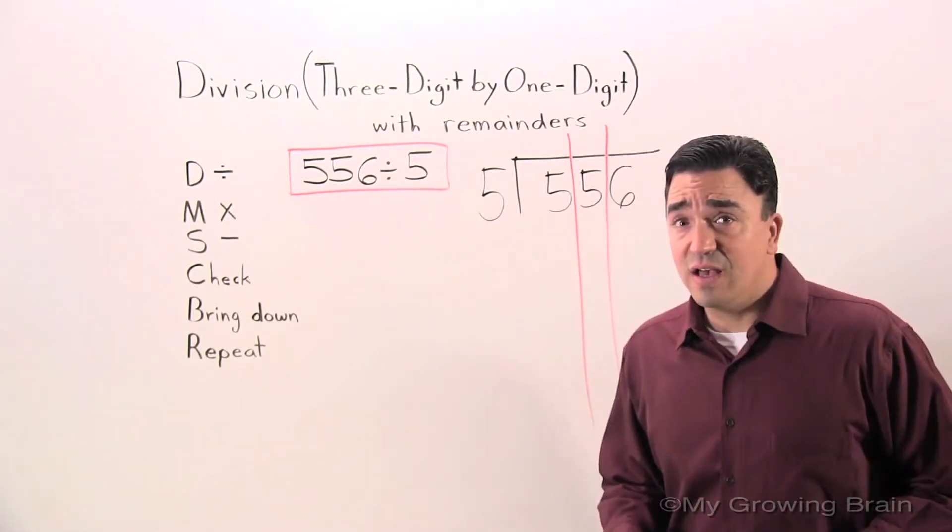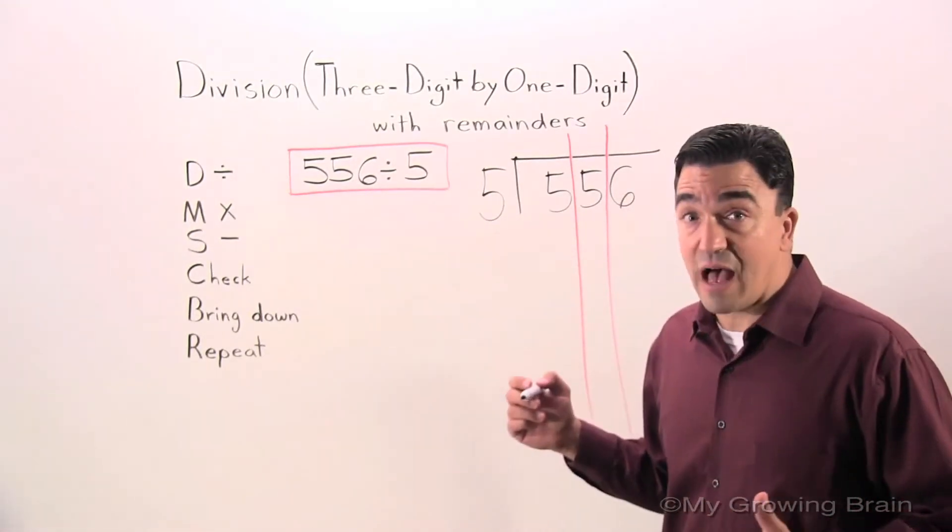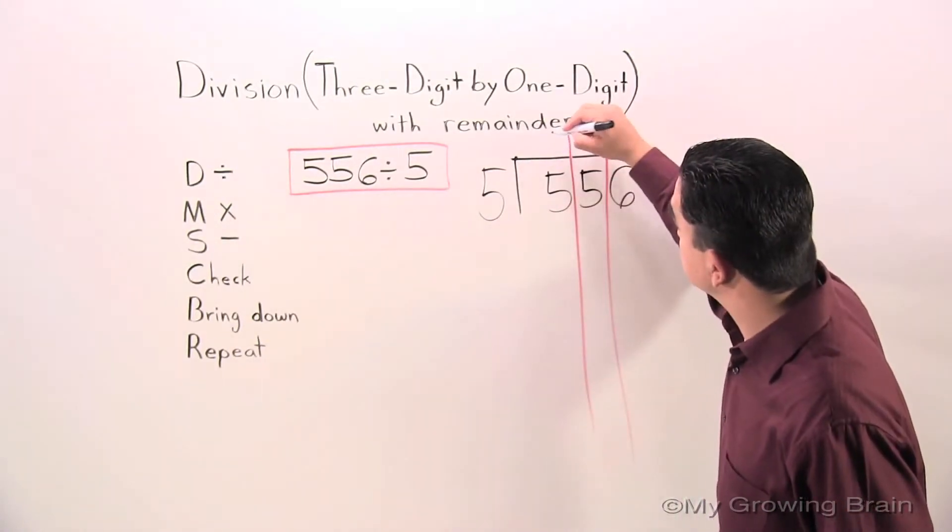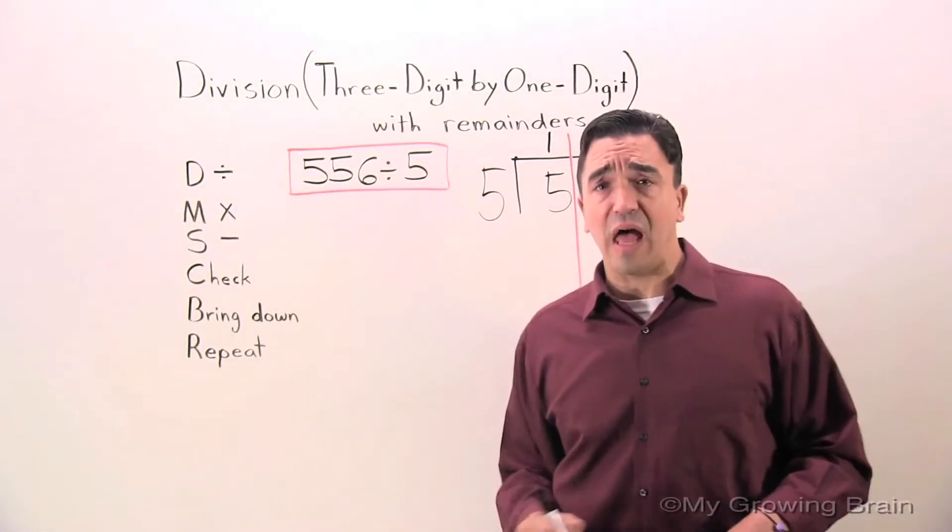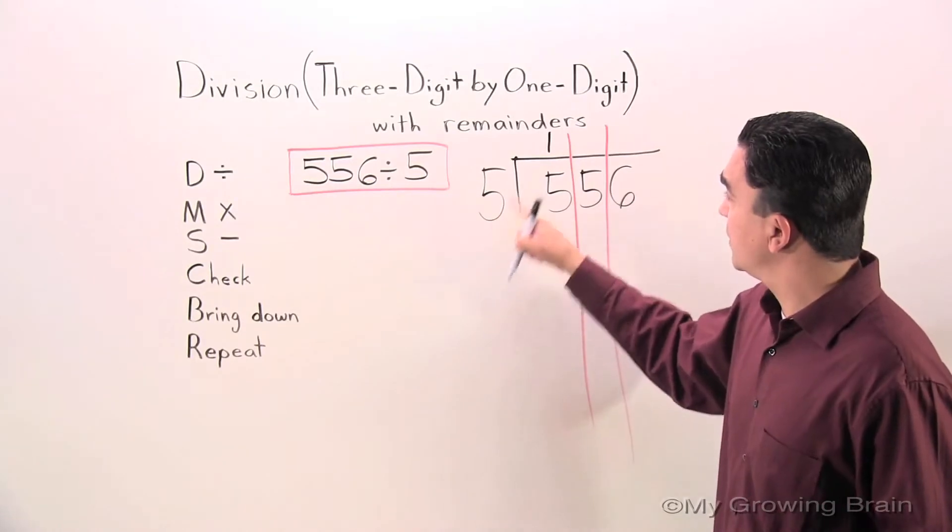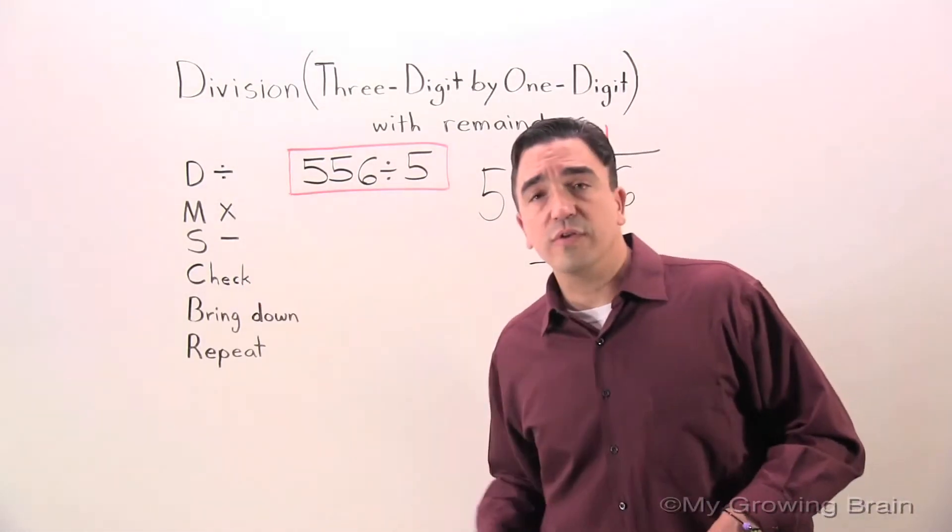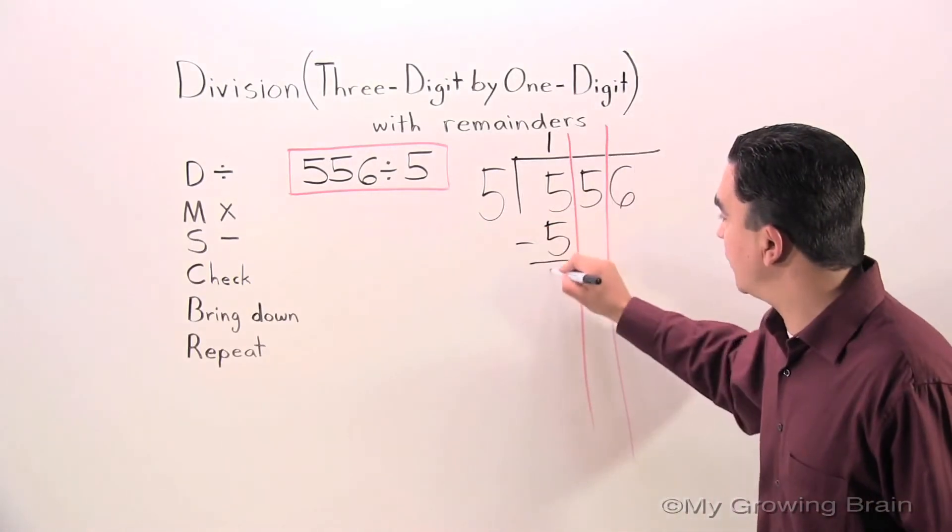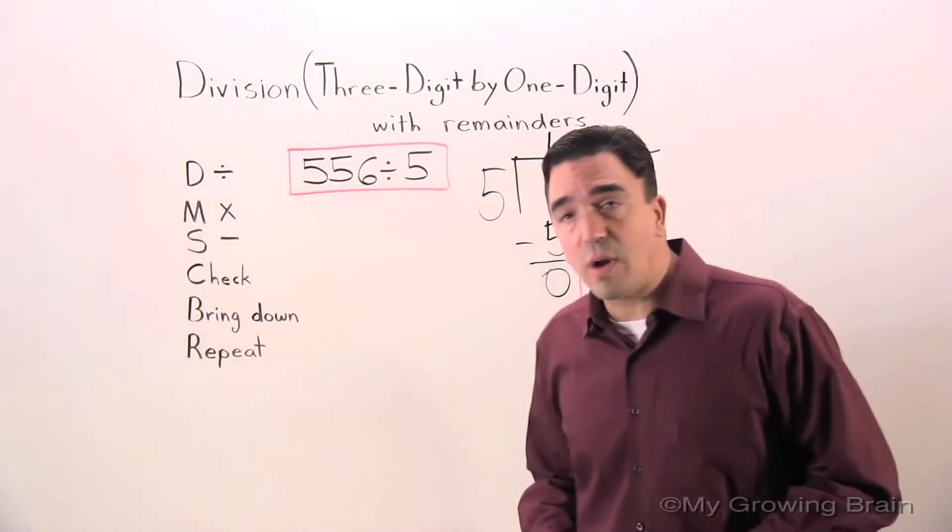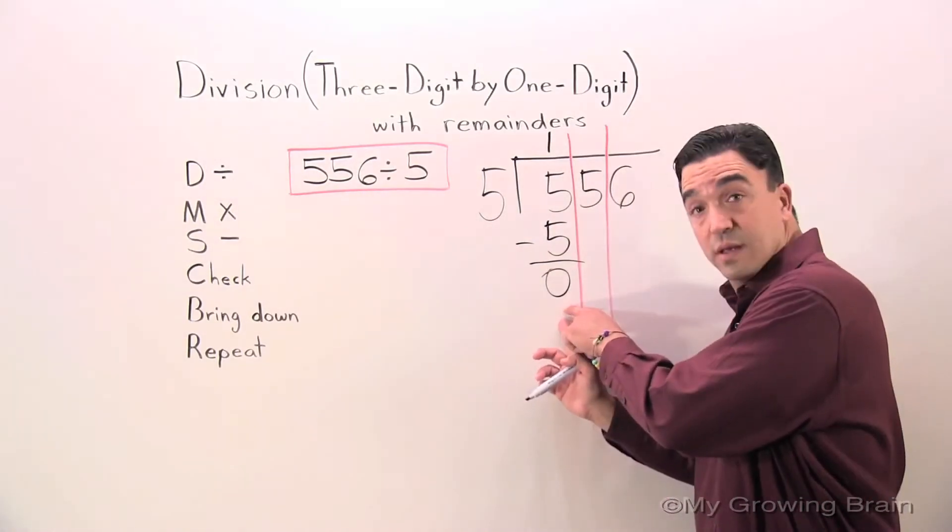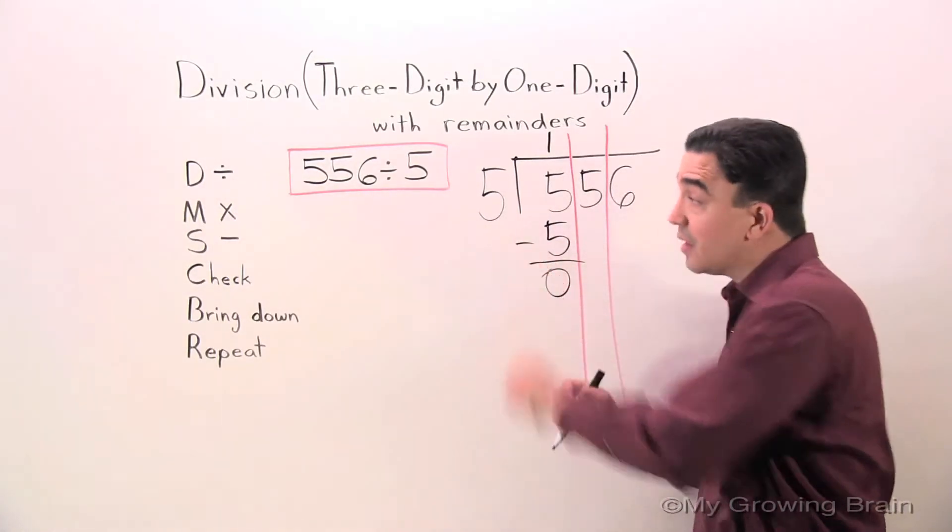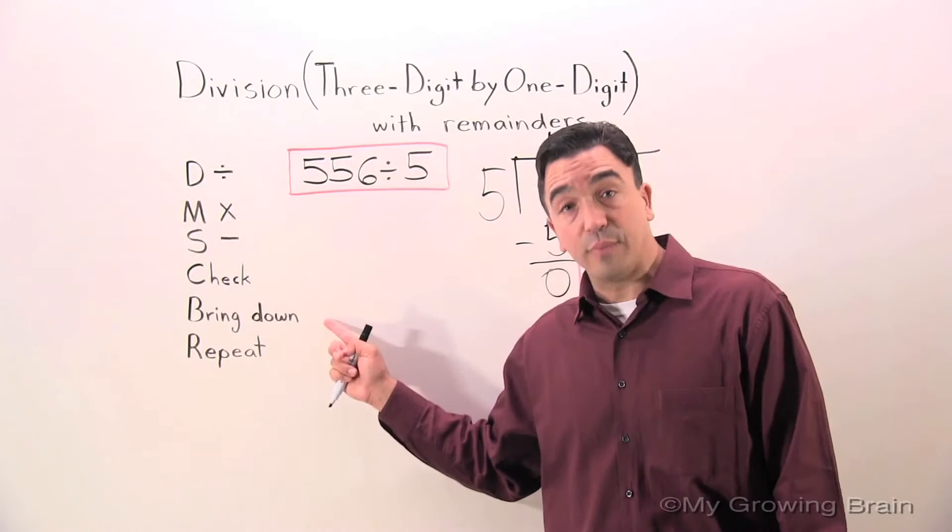Five into five, or five divided by five, is one. Next step, multiply. Five times one is five. Subtract five minus five, zero. Check. This is smaller than that. Therefore, I can bring down.